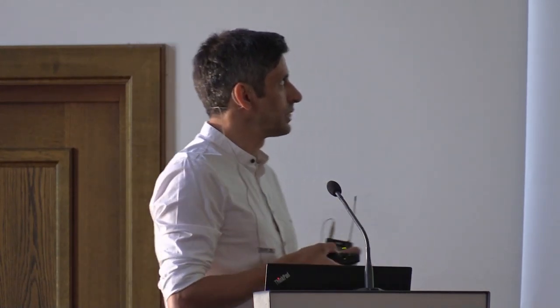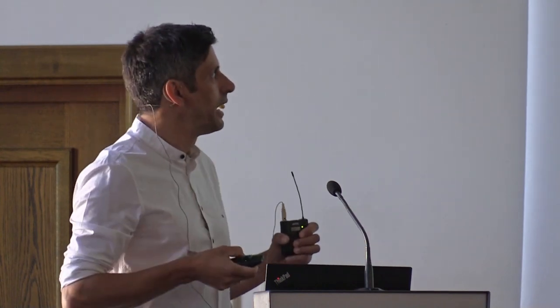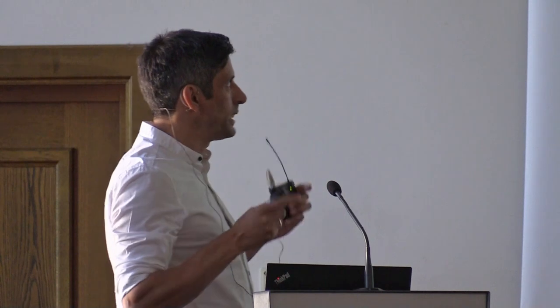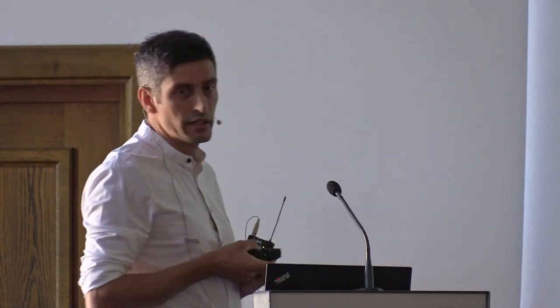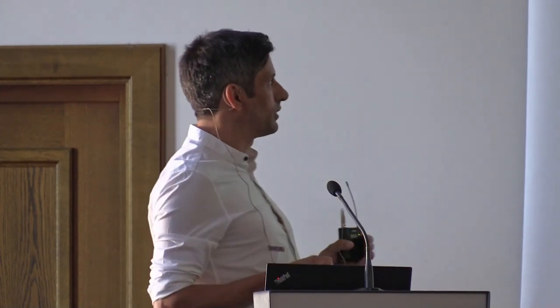How will the MadMax prototype look? It is actually a scaled-down prototype of MadMax, composed of a booster with up to 20 dielectric discs of 300 mm in diameter. The cryostat has already been purchased and will be delivered at CERN at the end of this year or the beginning of 2023. We are also in the design phase of the receiver cryostat — a separate cryostat with the ability to move the antenna inside, which will be flexible in use. We have received the K-band antenna, and optical system components are under construction. Once installed and commissioned, we will be ready to demonstrate the feasibility of the key technologies for MadMax and start competitive ALP research with a dielectric haloscope.